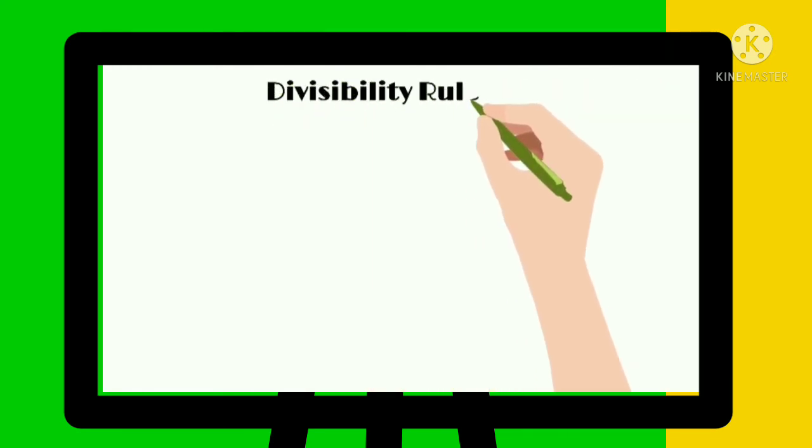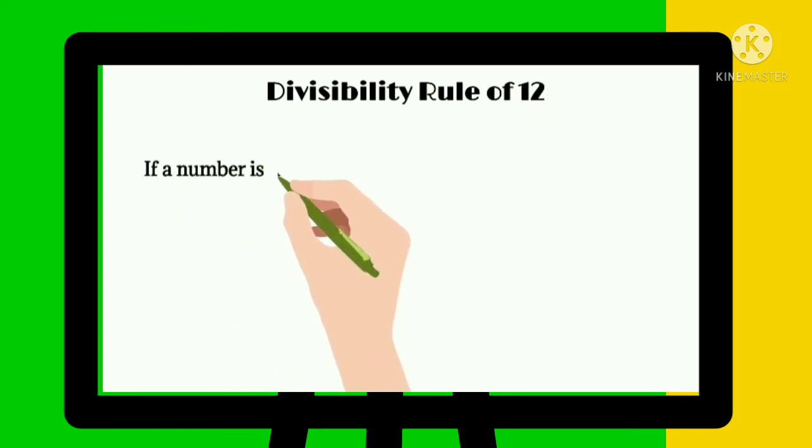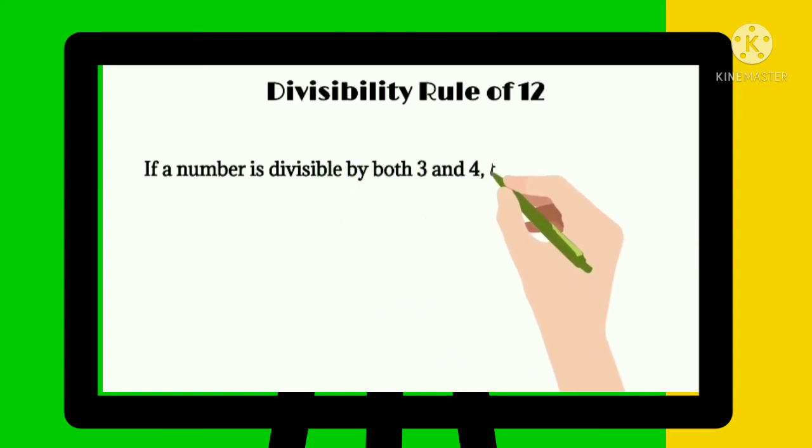Divisibility rule of 12: If a number is divisible by both 3 and 4, then the number is divisible by 12.